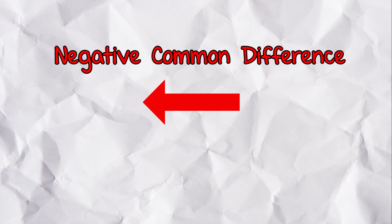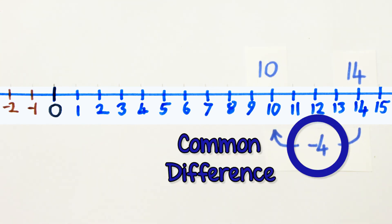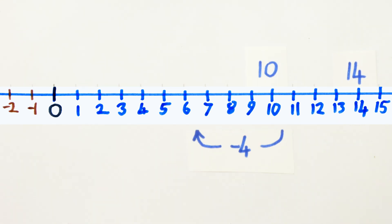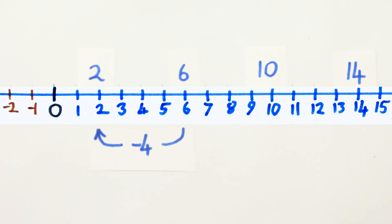The common difference can be negative. This sequence starts at 14. Minus 4 is 10, minus 4 is 6, minus 4 is 2, and so on.